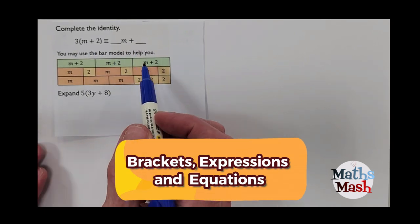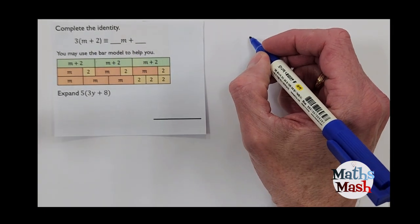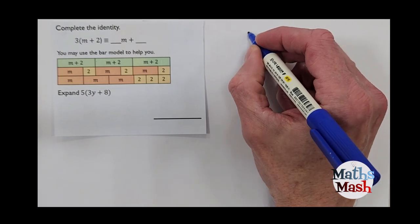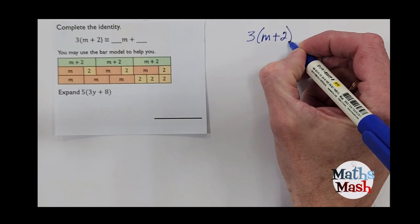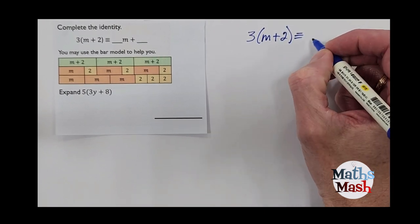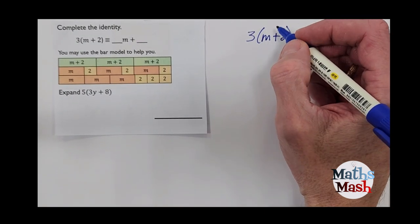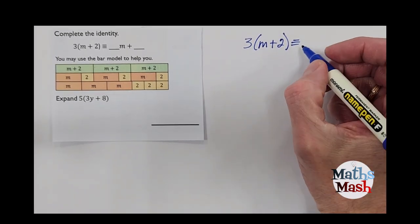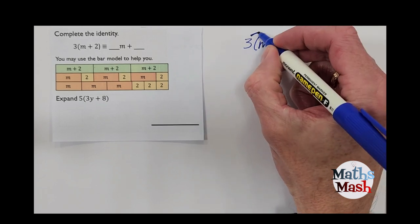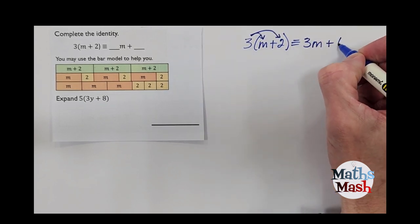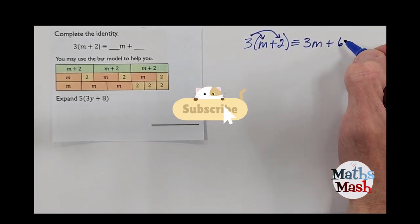Okay, in the first question here we've got 3 bracket m plus 2, and then we've got our tri-bar. So I'm just going to write the question out again here, and you can see that basically we're going to take the 3 and we're going to multiply it by everything inside the bracket. So I go 3m plus 6 because 3 times 2 is going to be 6. And that's how you do it basically. That's quite straightforward.